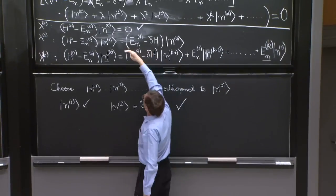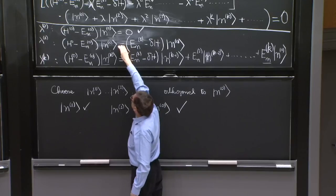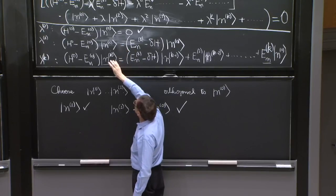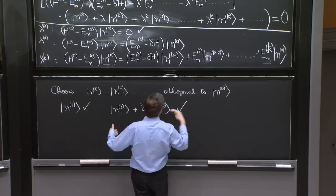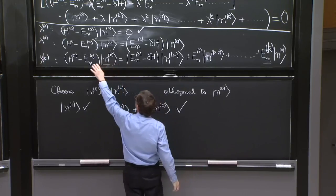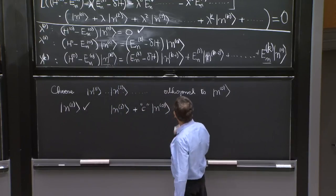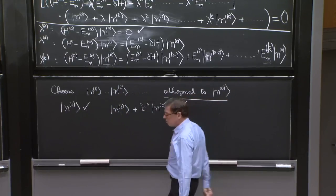Suppose you've solved now n1 that has no piece along n0, n2, n3, n4, all those. And you go up to here. And nk has a piece along n0. You can still add the constant to nk times n0 and make it work. So you can always do that. They're orthogonal to n0.